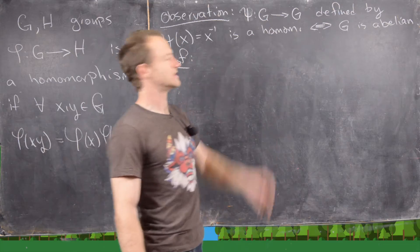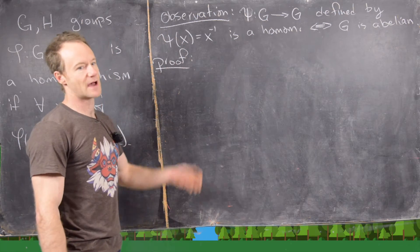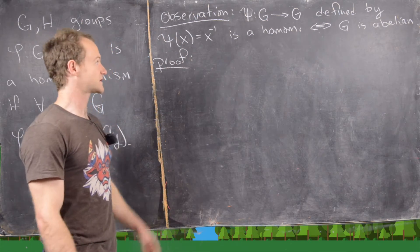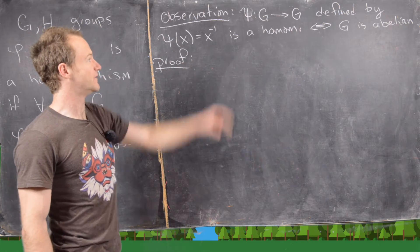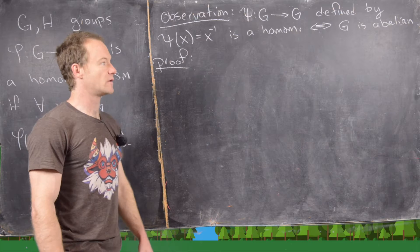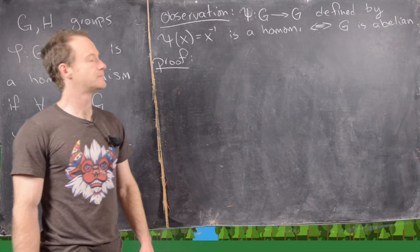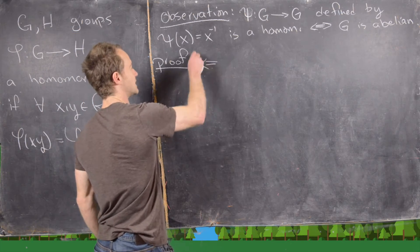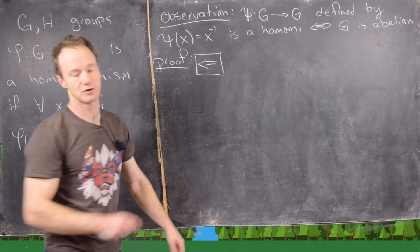We're assuming that G is a group and so that means that every element has an inverse. And what we will prove is that this function is a homomorphism if and only if G is abelian. So this is an if and only if statement, so we have two directions to prove.